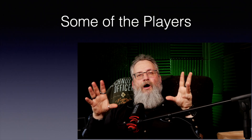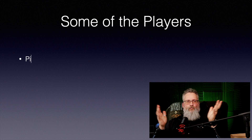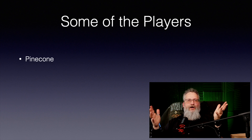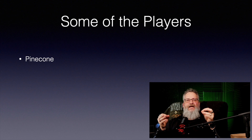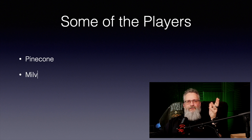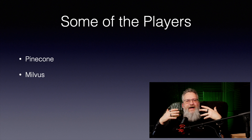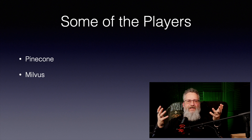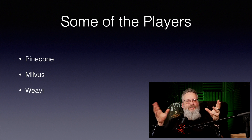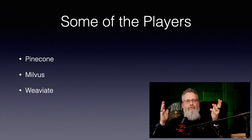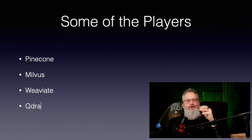Here are some of the top players in the vector database world. Weaviate — the cool kid everyone's talking about: scalable, fast, and developer-friendly. Milvus — the open-source heavyweight with the speed to match any use case. Weaviate — the Swiss Army knife, perfect for hybrid search combining text, vectors, and more.